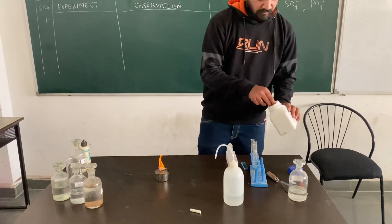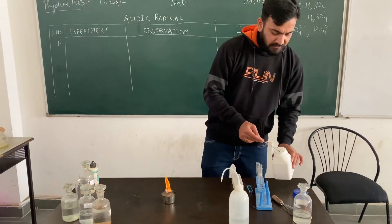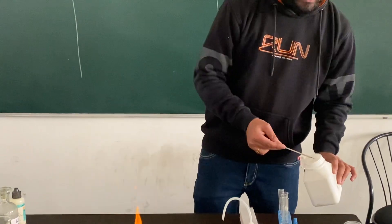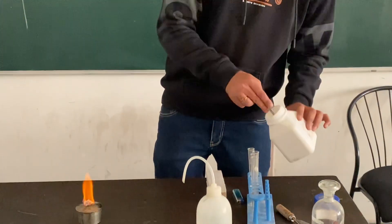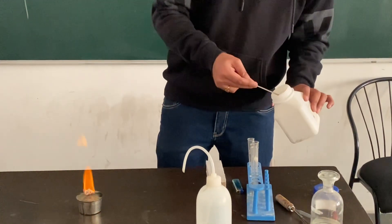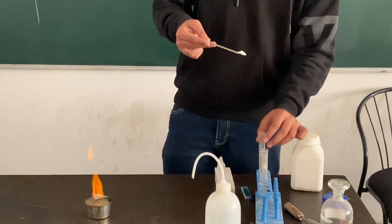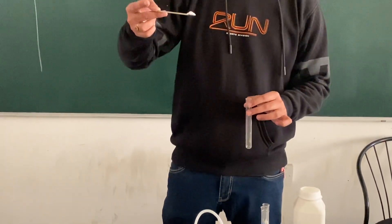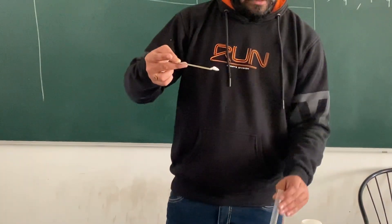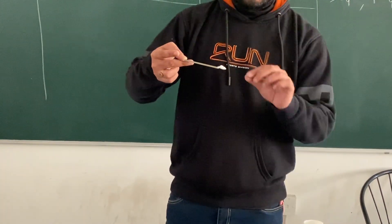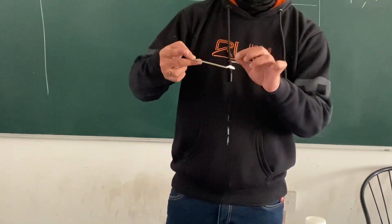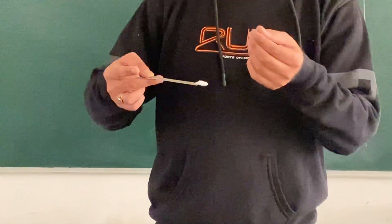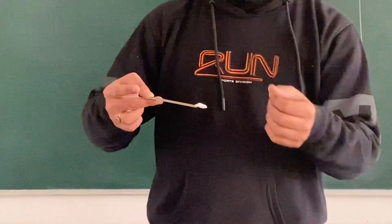Now the salt will be given to you and you have to observe what type of salt it is — whether it is a white salt or a colourful salt. As you can see, it is a white salt. Regarding its state, you can just touch it and find there are no crystals, so it is amorphous.